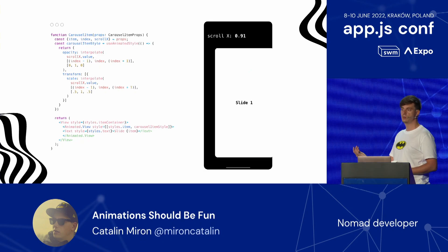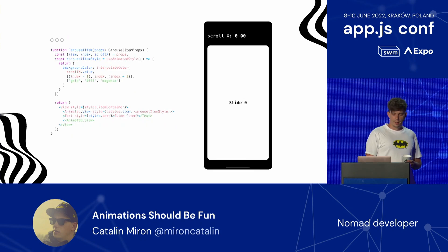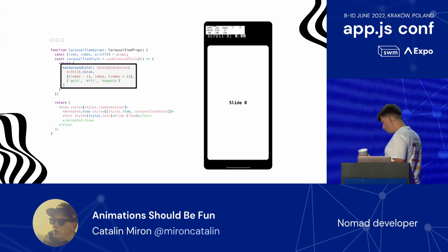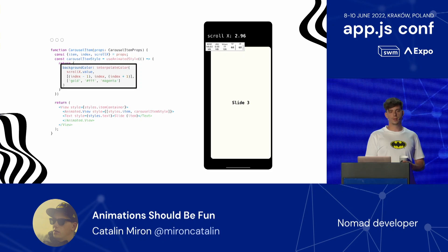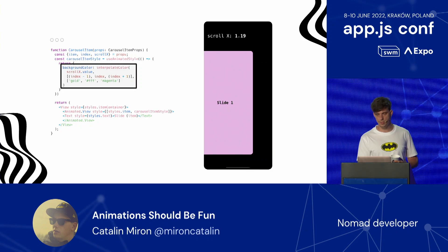You can go crazy — you're not limited to opacity. You can translate things, apply a different scale when the item is going to the left or right side, or even interpolate colors. If it's going to the left it's magenta, going to the right it's gold, otherwise it's white. As you can see from the performance monitor, everything is running at 60 FPS or 120 FPS depending on your device capabilities. This wasn't possible using the Animated API, but now it's possible because everything is running on the UI thread, which is really performant.